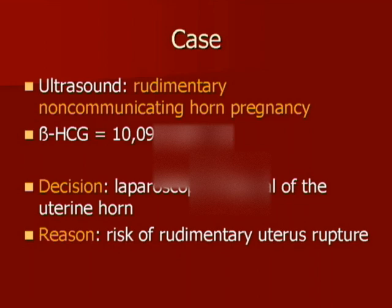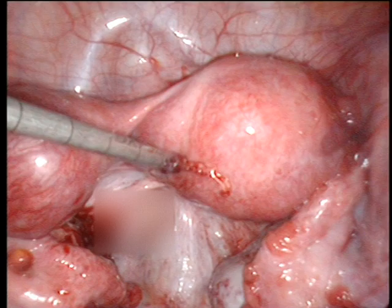These arguments suggested a rudimentary non-communicating horn pregnancy. The beta-human chorionic gonadotropin titer was 10,000 mUnits per milliliter. Even though the woman was free of pain, a surgical procedure was proposed because of the expected risk of rudimentary uterus rupture.